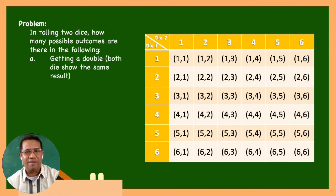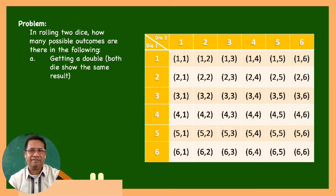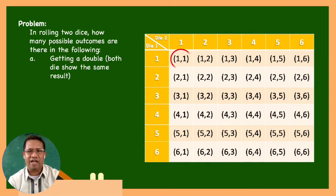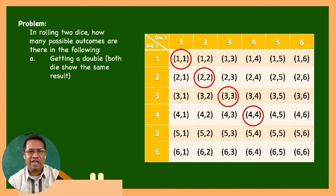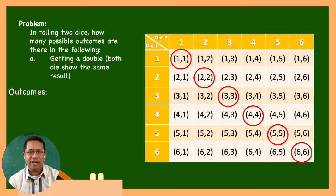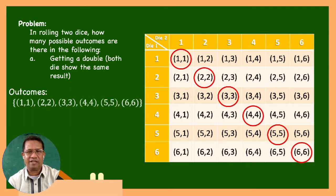Let's go back to the problem. How many possible outcomes are there in A: Getting a double? Meaning both dice show the same result. The outcomes are (1,1), (2,2), (3,3), (4,4), (5,5), (6,6). There are 6 possible outcomes.